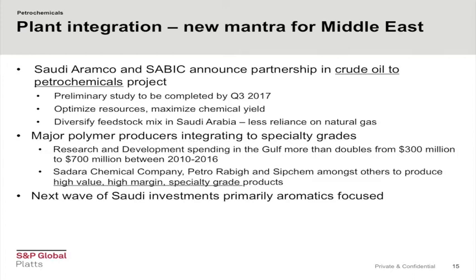Many of these products have never been produced in the Middle East before. Sadara will also be the first complex in Saudi Arabia to use naphtha as a key feedstock rather than natural gas. Petro Rabigh and Sipchem are also producers looking at speciality grade polymers. On the aromatics side, there has been a lot of investment and we are expecting significant new capacity in benzene and paraxylene in the next few years, all of which are looking to use oil and naphtha as feedstock.